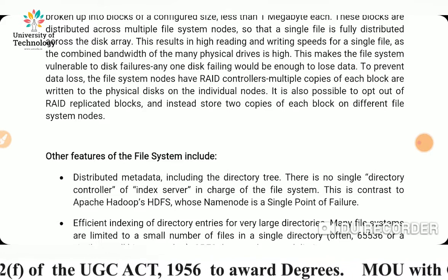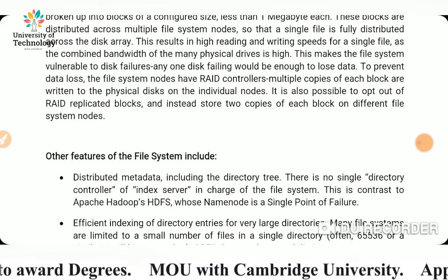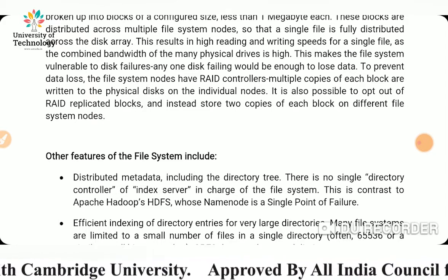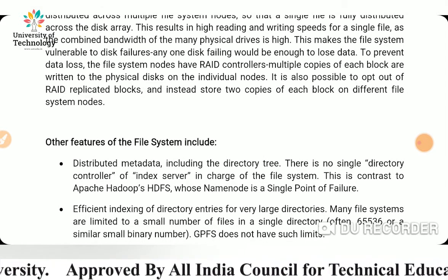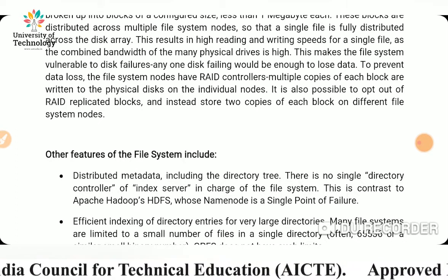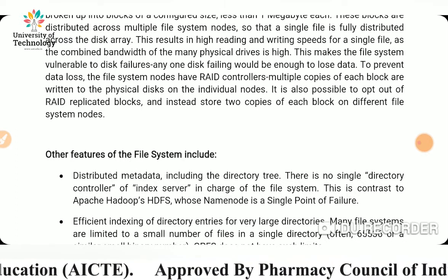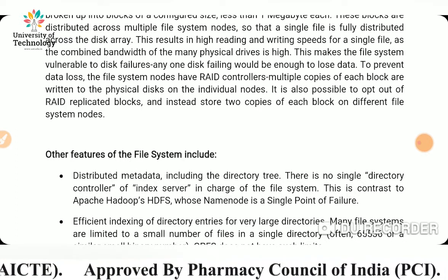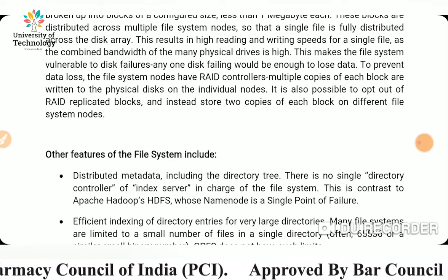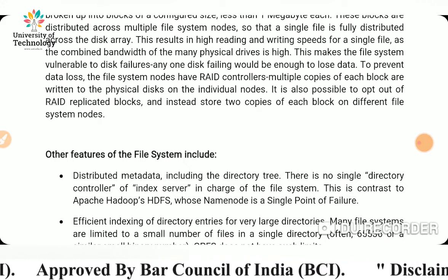To prevent data loss, the file system nodes have RAID controllers and multiple copies of each block are written to the physical disks on the individual nodes. It is also possible to opt out of RAID replicated blocks and instead store two copies of each block on different file system nodes.